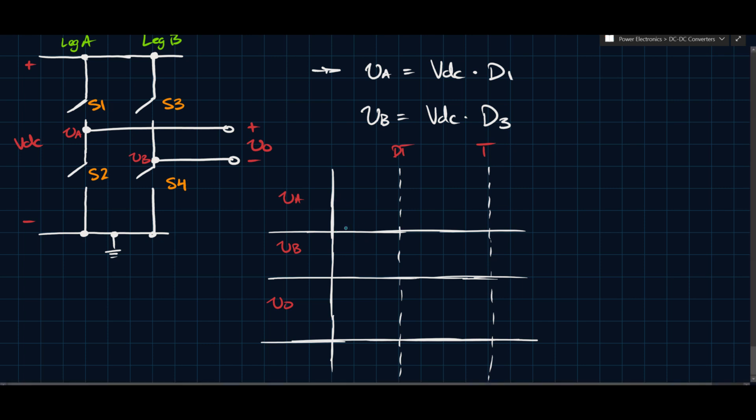And so if we do that, if S1 and 4 are on, then VA would be non-zero. It's not that it would be zero, it would be non-zero. So it would be positive.